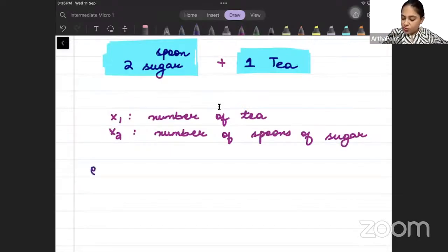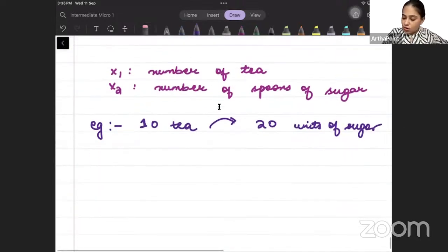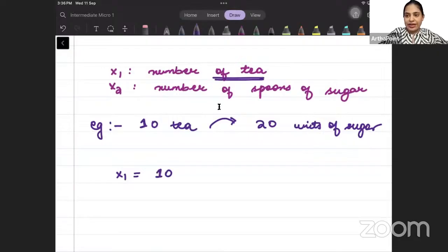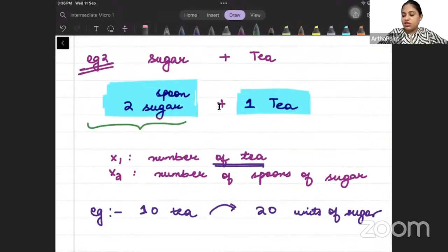Listen to me very carefully. Suppose I tell you that I need 10 tea. I need to make 10 chai. Then how much sugar will be needed? 20 units of sugar. I will need 20 units of sugar. When x1 is 10, when I am making 10 units of tea, I need 20 sugar spoons. So x2 will be 20. You are seeing this na. Sugar is twice tea.